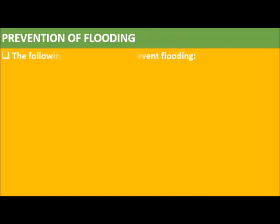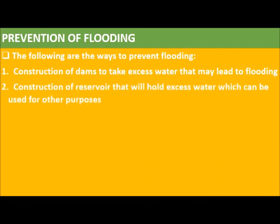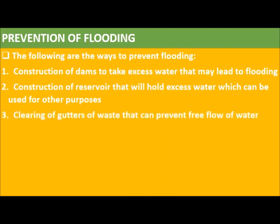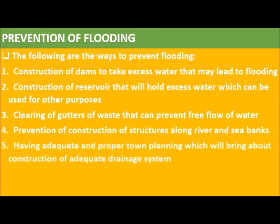Prevention of flooding: 1. Construction of dams to hold excess water that may lead to flooding. 2. Construction of reservoirs that may hold excess water, which can be used for other purposes. 3. Clearing of gutters of waste that can prevent free flow of water. 4. Prevention of construction of structures along rivers and sea banks. 5. Adequate and proper town planning, which will bring about construction of adequate drainage systems. 6. Education.